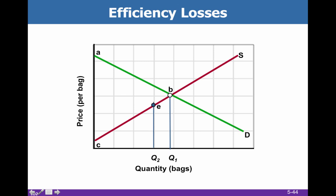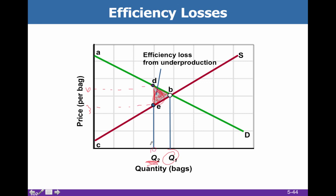However, we sometimes have efficiency losses. Instead of producing the efficient quantity Q1, if we produce Q2, we are not making as much as an efficient market would make. This triangle represents that loss. If we have values of 3, 6, and 10, we can do one-half base times height: base is 10, height is 3, giving us 30 divided by 2 equals 15. So underproduction gives us a $15 efficiency loss.